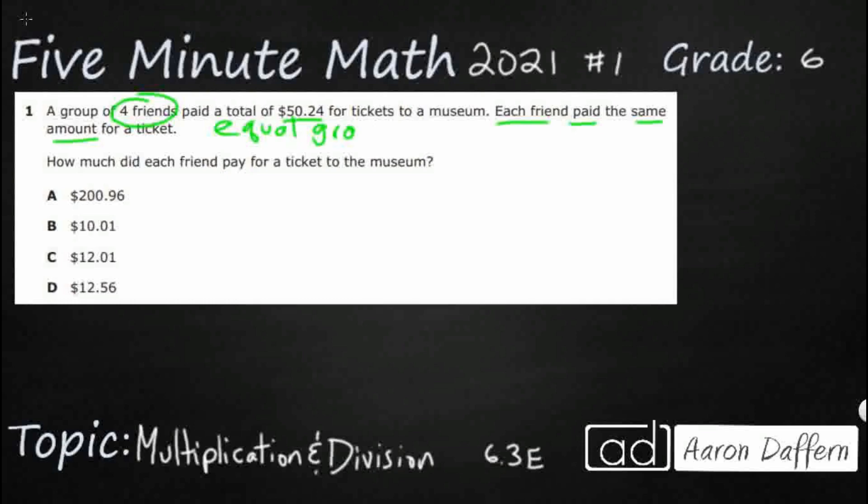We are looking at division. So how much did each friend pay for a ticket to the museum? Well, let's just set this up as division.